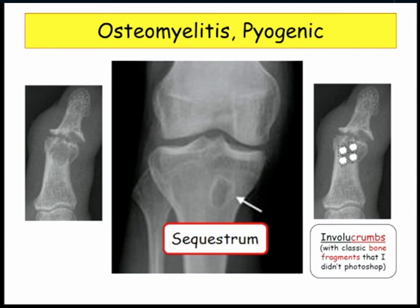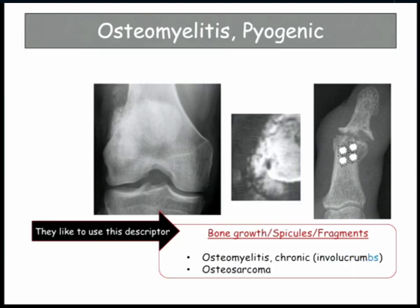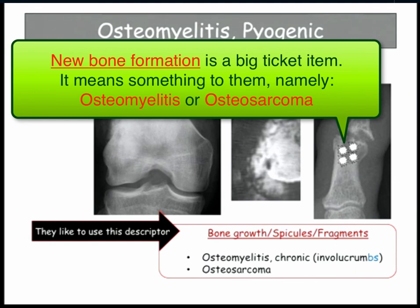When they talk about spicules, fragments, and bone growth in questions, they're trying to give you a message. You're not going to confuse sarcoma and osteomyelitis clinically — the issue of bone growth with dead bone and new bone growing applies to both osteomyelitis and osteosarcoma, and we'll drive that home when we get to osteosarcoma.